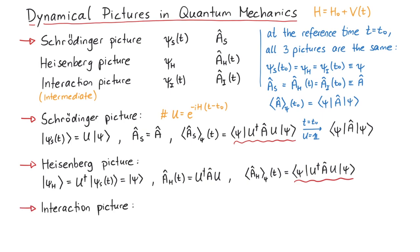Finally, the interaction picture. Compared to the Schrodinger picture states, we want to remove the time evolution with respect to h0, so that states only evolve using the potential v.